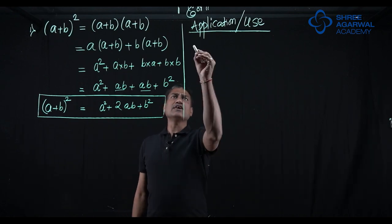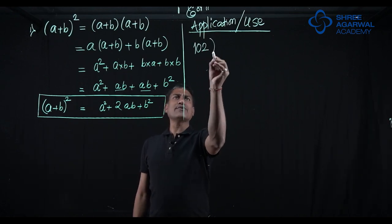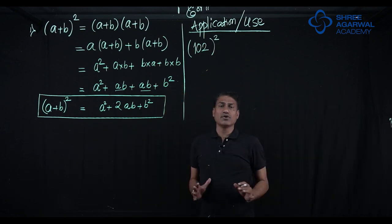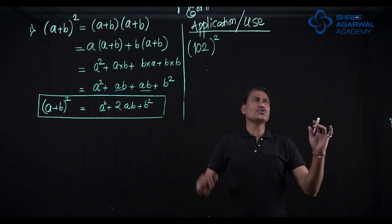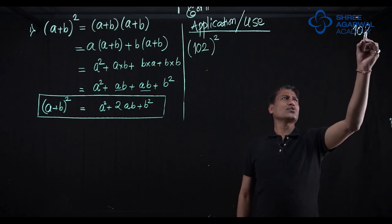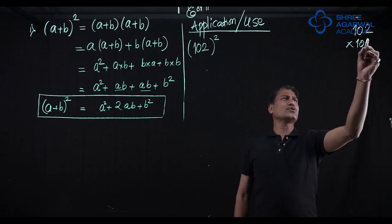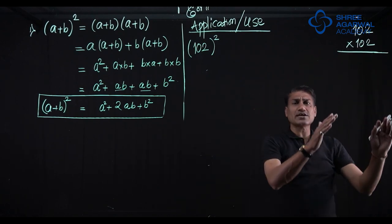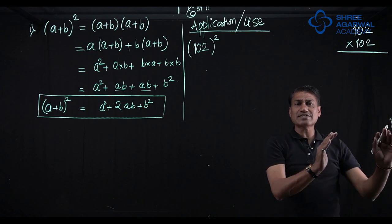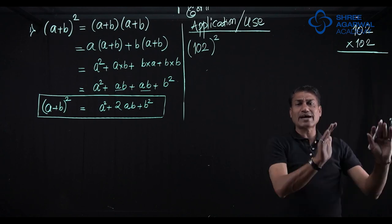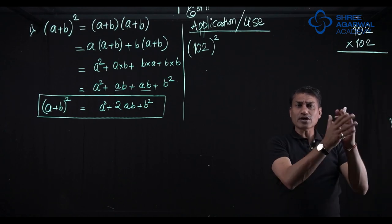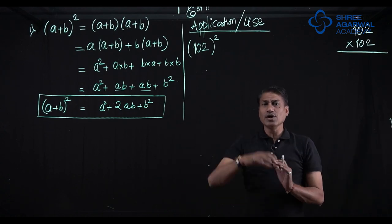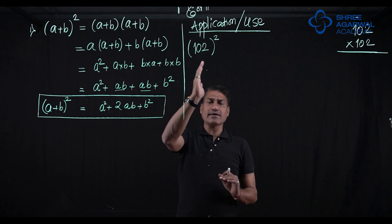For example, if they give you 102 is square, if you want to square 102. What is the regular method? The usual method will be 102 into 102, right? Now you have to do all this long method, this will take more steps, this will take more time. If you want to cut short this, if you want to find a square of 102, you can immediately use this expansion here.